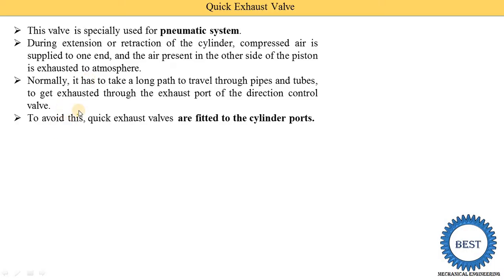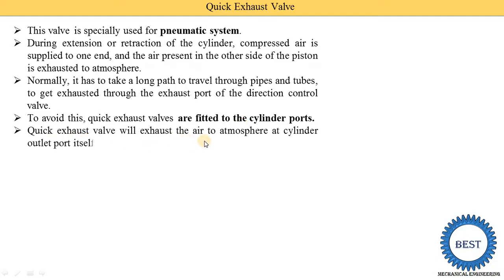In a pneumatic system, air coming out from the rod end port travels through pipes and tubes to the directional control valve — this is a very long path. To avoid this, quick exhaust valves are fitted to the cylinder ports. The air coming out from the rod end port is not sent back to the directional control valve. Instead, the quick exhaust valve exhausts the air to atmosphere at the cylinder outlet port itself, avoiding the need to travel a long distance.